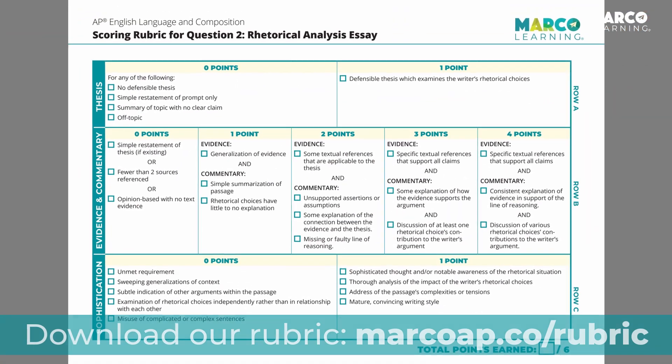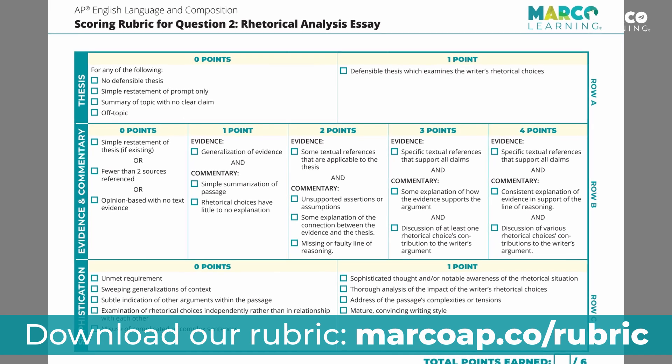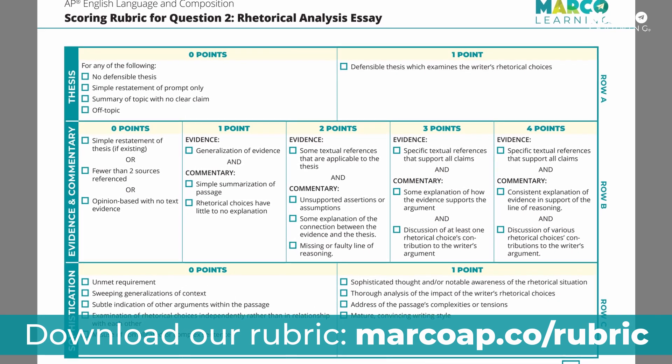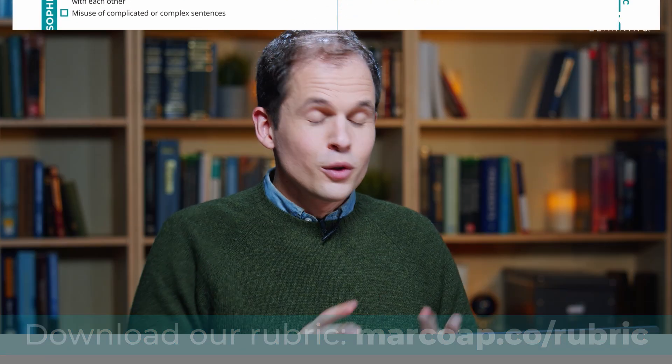Before I start, I want to tell you why you shouldn't be focused on the sophistication point. The six-point rubric for AP English Language this year has five of the six points that are not the sophistication point. Those five points are a lot easier to get than just this one point. So while it's useful to study how the point is awarded, don't focus your energy there. Focus on earning the point for thesis and for evidence and commentary, where you can earn up to four points. And if you haven't already, check out our video on the AP English Language rubric where I walk through it point by point.